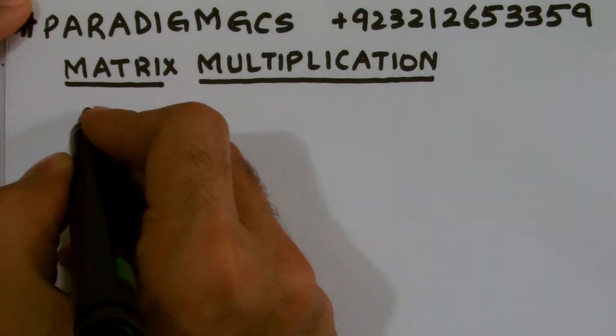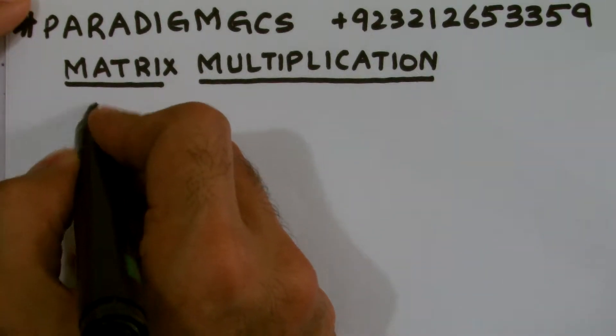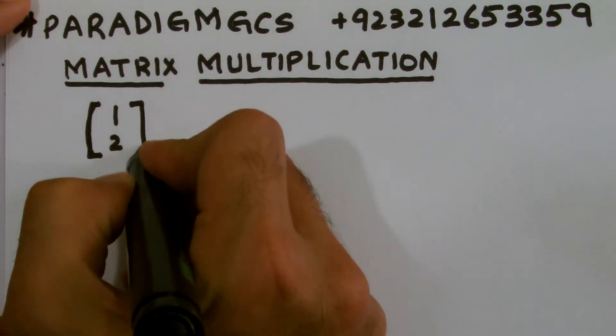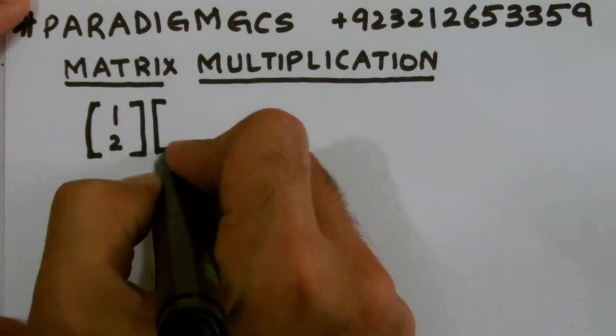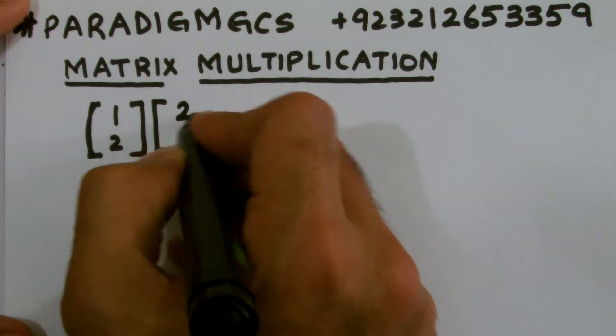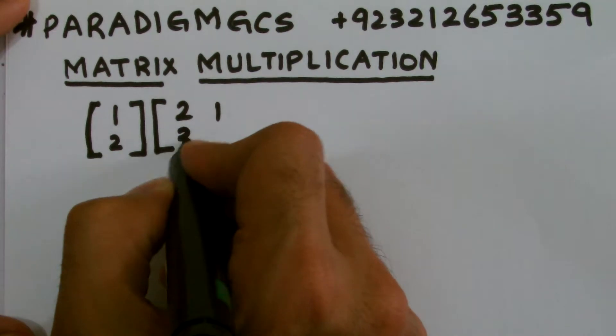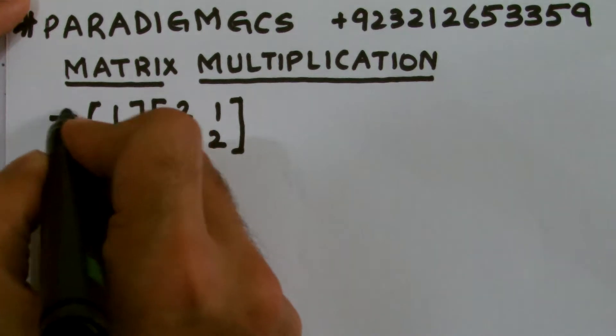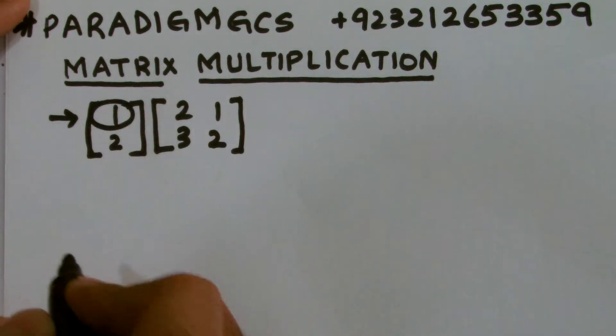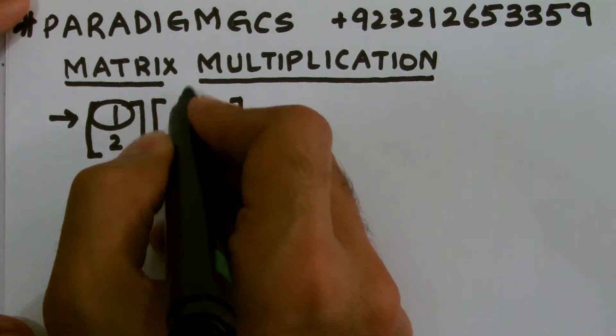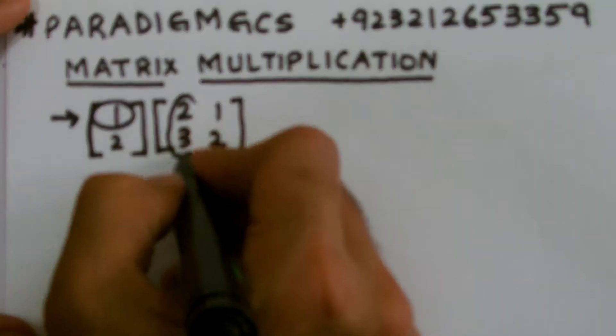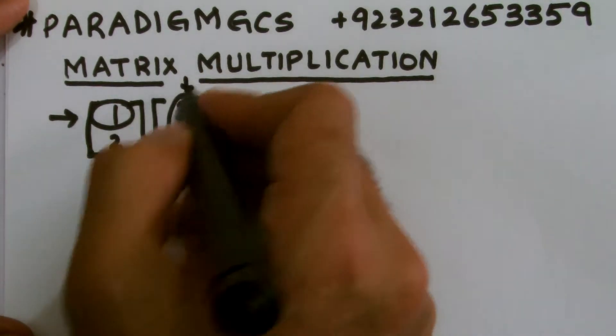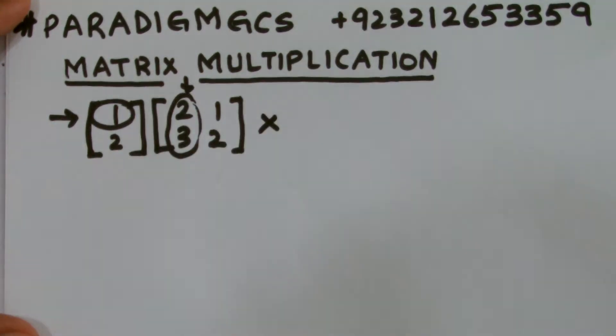If I want to multiply a column matrix 1, 2 with a square matrix having element 2, 1, 3, 2, then as I said, the number of elements in first row of the first matrix should be equal to the number of elements in the first column of the second matrix. You can see that I have only one element in the first row whereas I have two elements in the first column. So this is not possible at all.